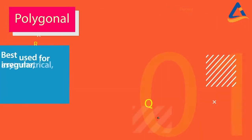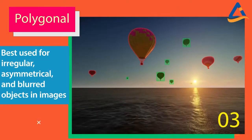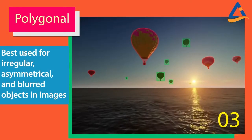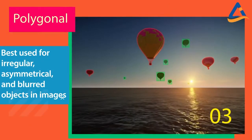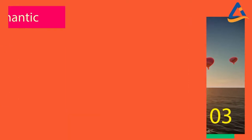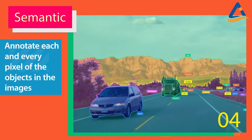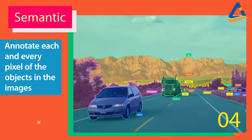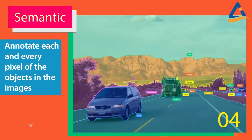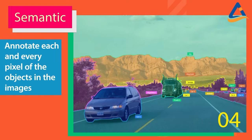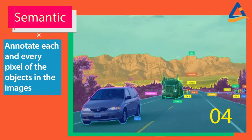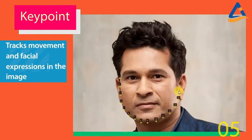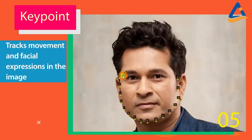Polygonal labeling is best used for irregular, asymmetrical, and blurred objects in images. Semantic segmentation annotates each and every pixel of the objects in the images and therefore improves accuracy. Key point labeling tracks movement and facial expressions in the images.